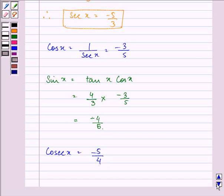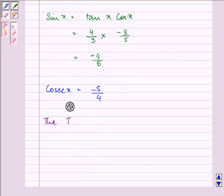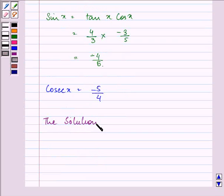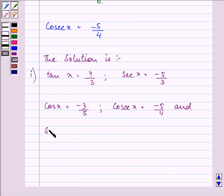So this completes the question that was given to us. Let me write the answer together. Therefore the solution is: tan x is equal to 4 by 3, sec x is equal to minus 5 by 3, cos x is equal to minus 3 by 5, cosec x is equal to minus 5 by 4, and lastly sin x is equal to minus 4 by 5.